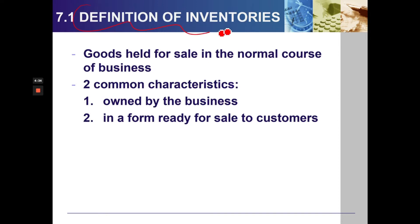Definition of Inventories. Inventory is goods held for sale in the normal course of business. There are 2 common characteristics of inventories: owned by the business, and in a form ready for sale to customers.